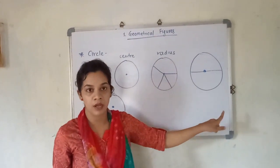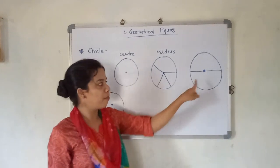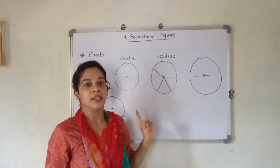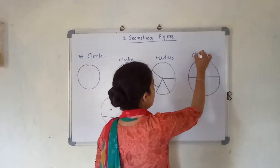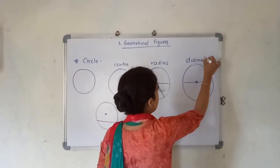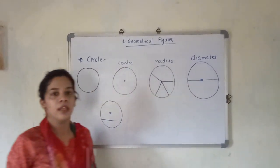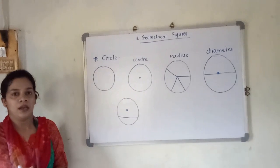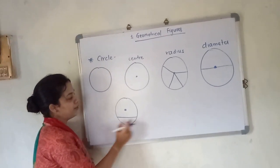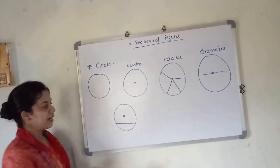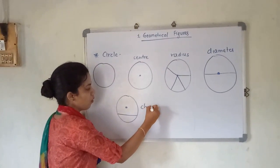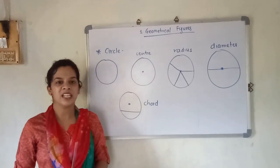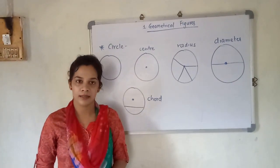The line which passes through the center and touches both sides of the circle is called the diameter. And the last part: if you draw a line touching any two points of the circle, it is said to be a chord. We will discuss the next part later.